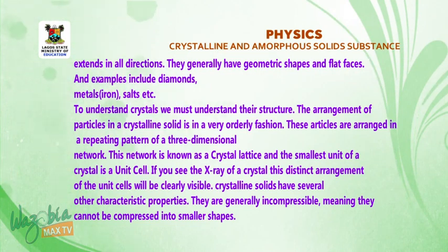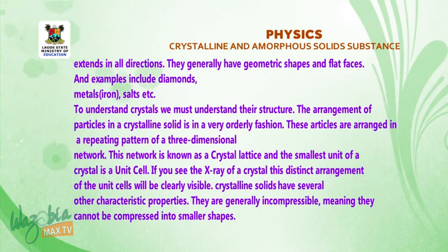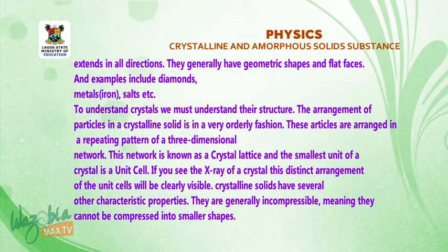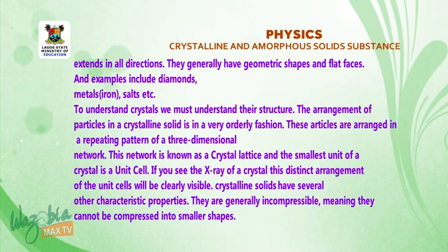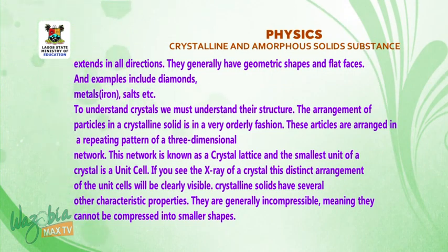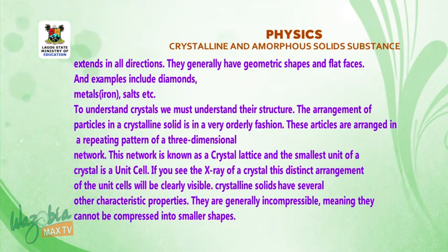To understand crystals, we must understand their structure. The arrangement of particles in a crystalline solid is in a very ordered fashion. The particles are arranged in a repeating pattern of a three-dimensional network — the molecules, ions, or atoms are arranged in a repeating pattern. This network is known as a crystal lattice, and the smallest unit of a crystal is a unit cell.